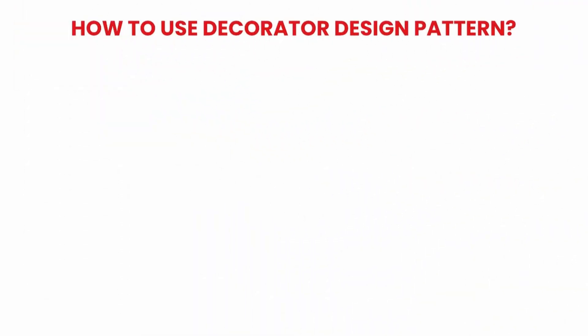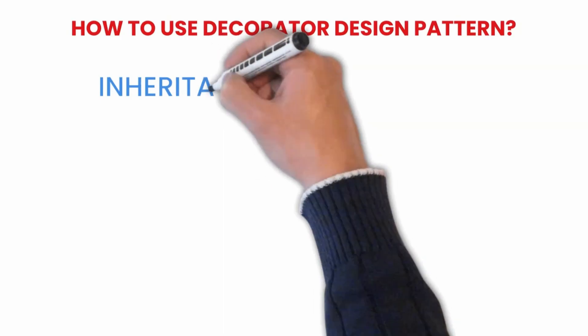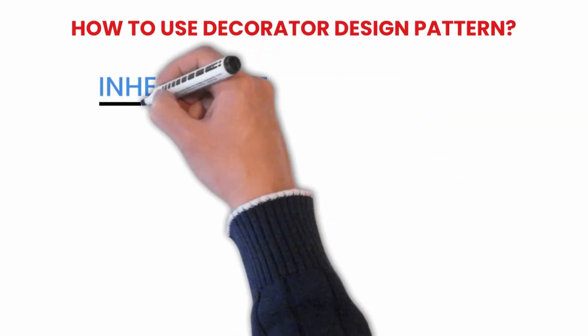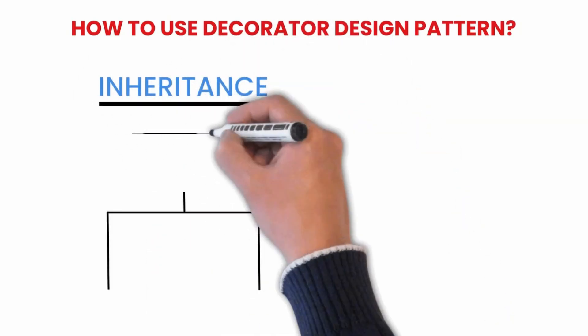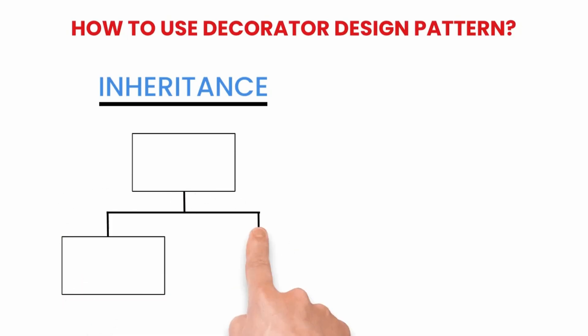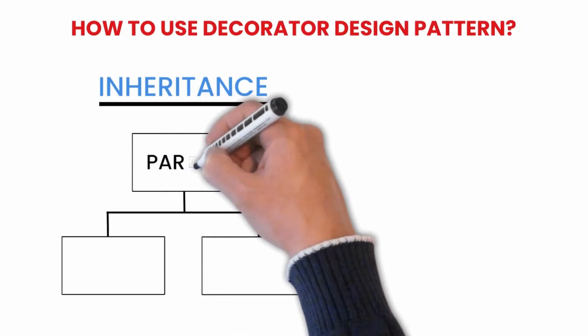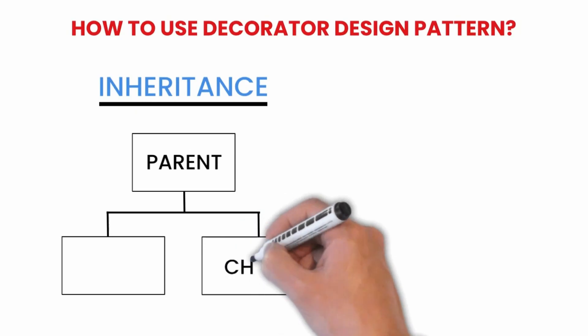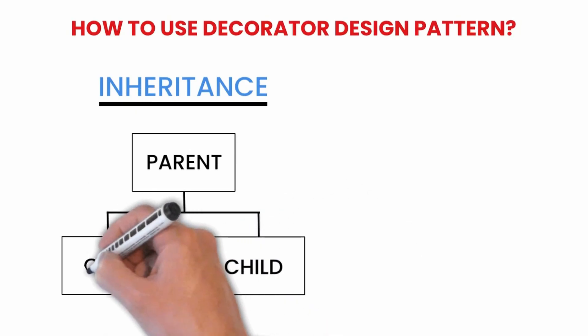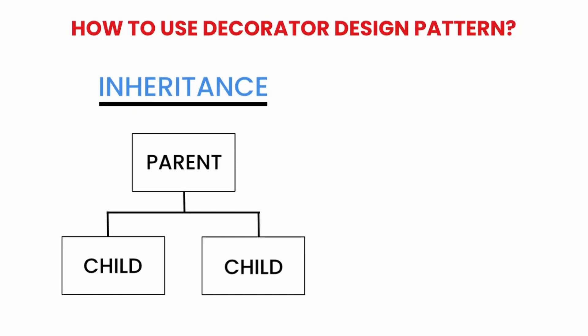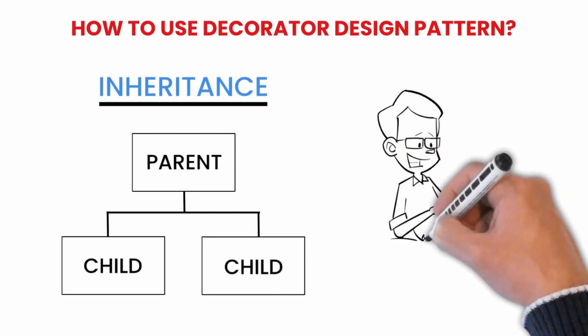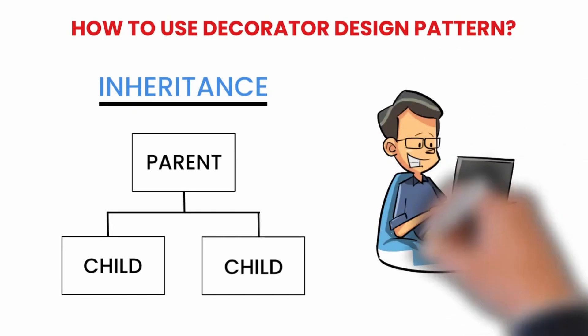How to use decorator design pattern? Decorator design pattern allows us to dynamically add functionality and behavior to an object without affecting the behavior of other existing objects within the same class. We use inheritance to extend the behavior of the class. This takes place at compile time, and all the instances of that class get the extended behavior.